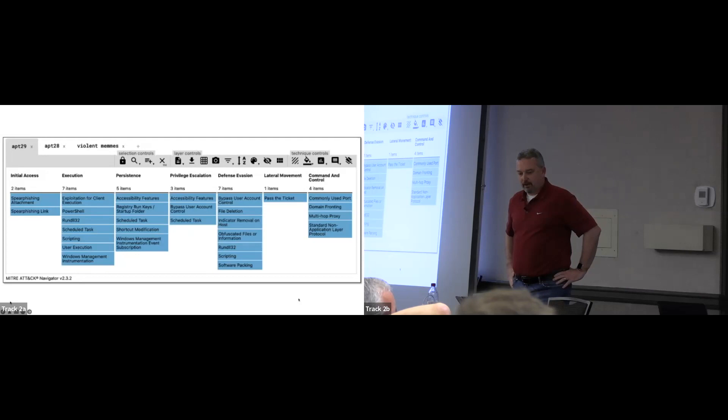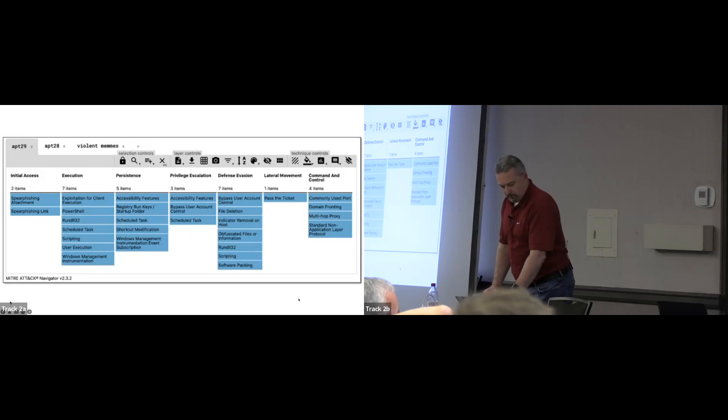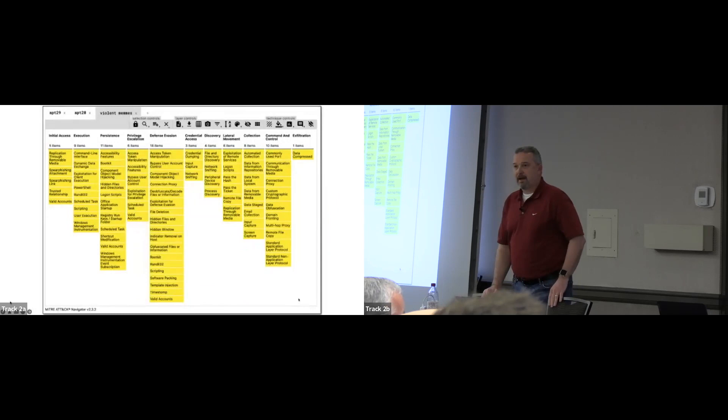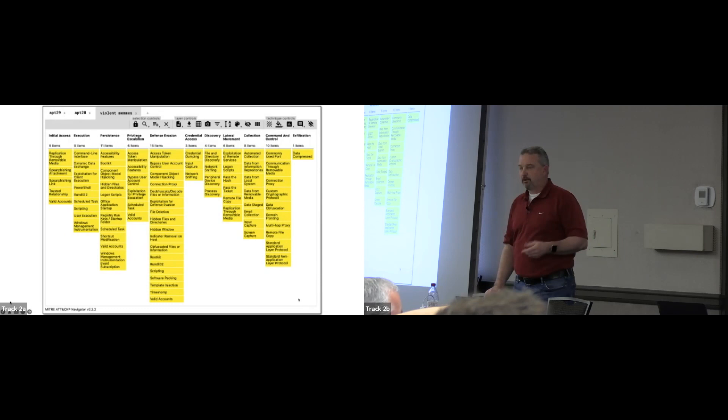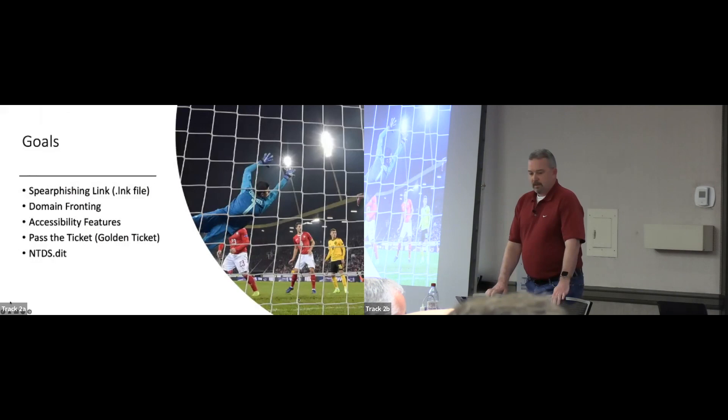In the ATT&CK Navigator — this was before sub-techniques, so it was a lot smaller — I pulled up APT28 and APT29. That became my palette for the Violent Memes: my adversary technique palette to work off of as a starting point. I'm not going to use all of these things, but I'll pick and choose from them.